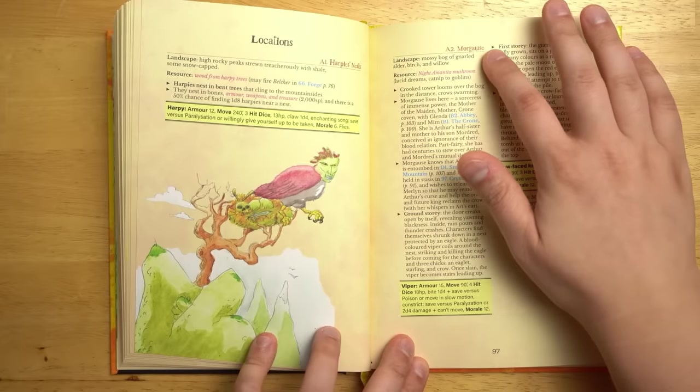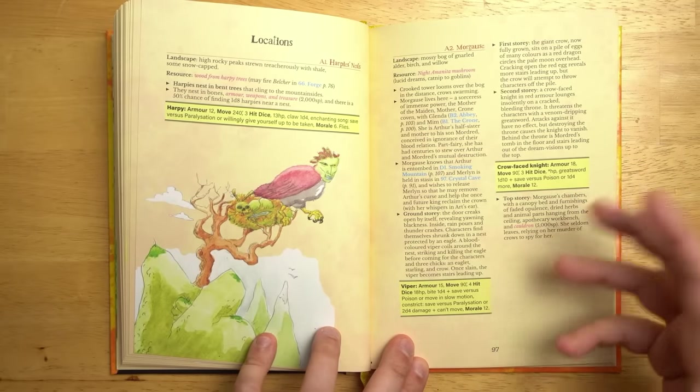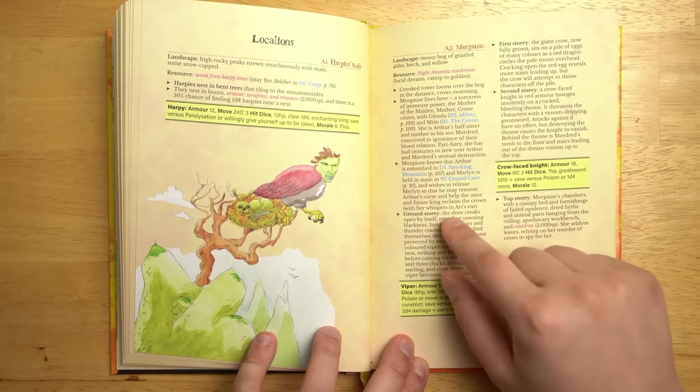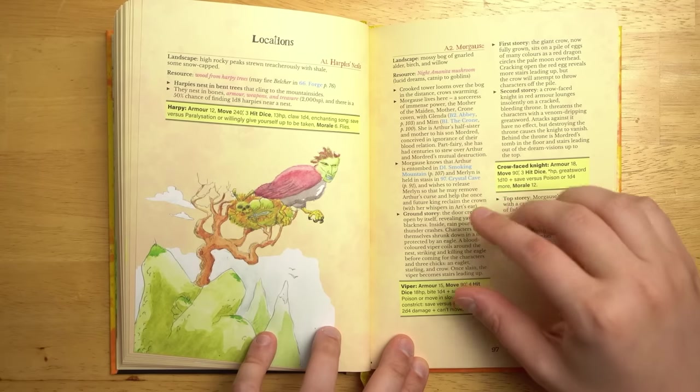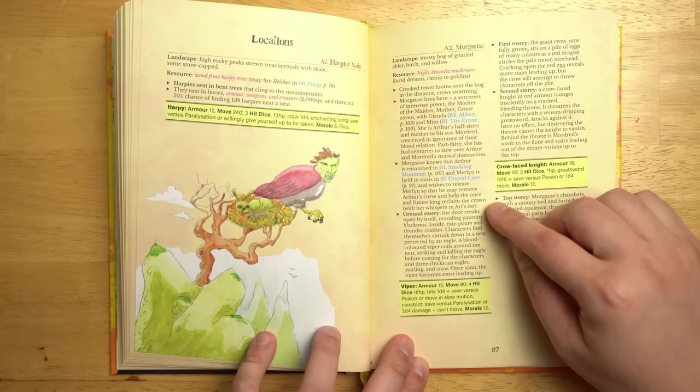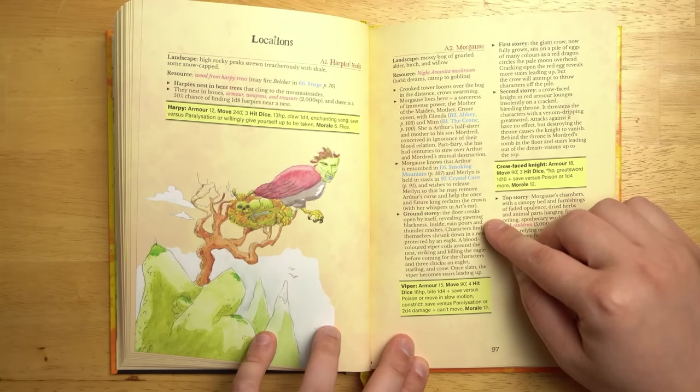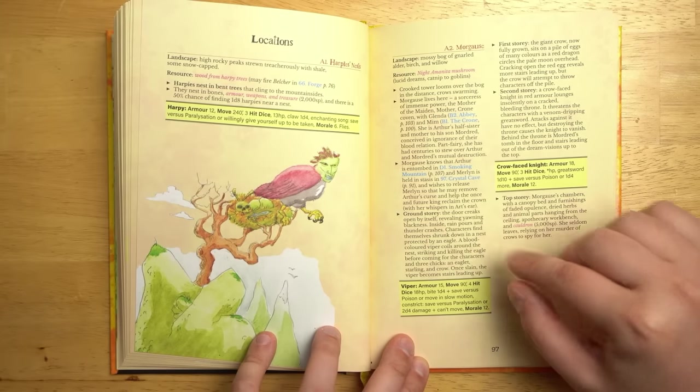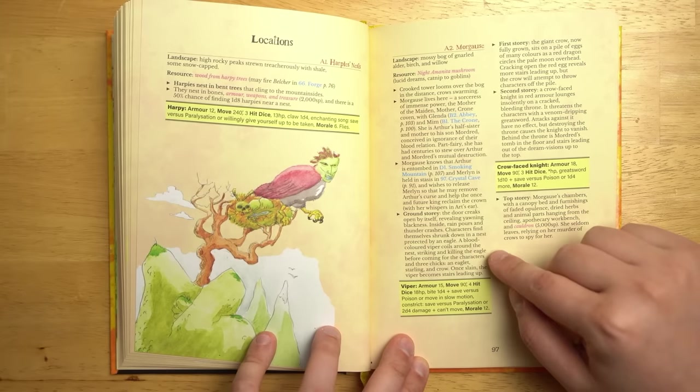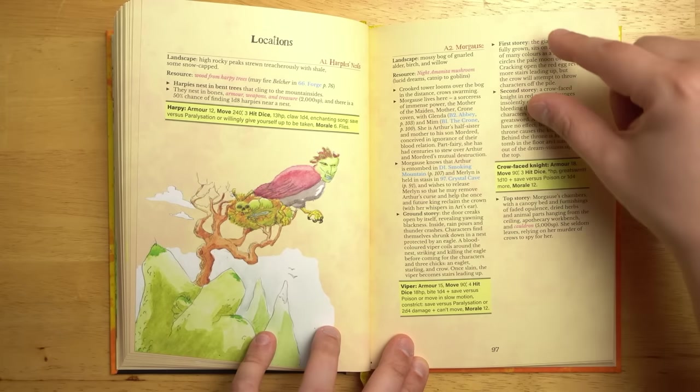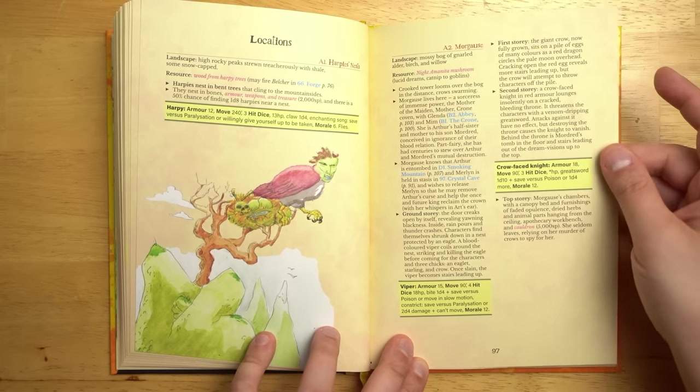You can find the Tower of Morgaz herself. There is a maiden, mother and crone coven around here and you can find each of those members if you explore enough. I like how actually trying to go up her tower takes you through a bunch of strange, almost like parable-like encounters, where on the ground story, it reveals yawning blackness. Inside, rain pours and thunder crashes. Characters find themselves shrunk down in a nest protected by an eagle. A blood-colored viper coils around the nest, striking and killing the eagle before coming for the characters in three chicks, an eaglet. Once slain, the viper becomes stairs leading up. And each level is its own little kind of mini story that you have to work through.